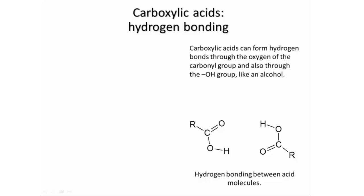For instance, a hydrogen bond could form between the carbonyl oxygen of one molecule and the hydrogen on the OH group of another, and simultaneously the other way around. So this pair of hydrogen bonds binds these two molecules together in a little pair.